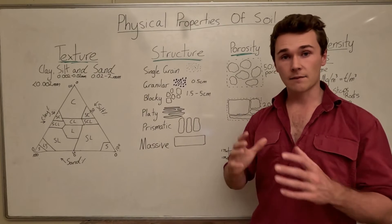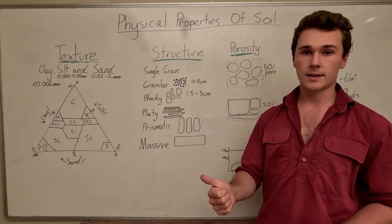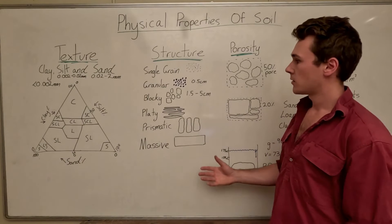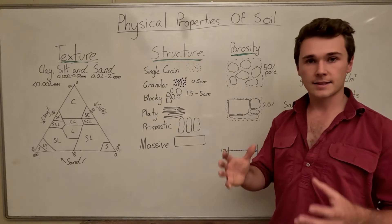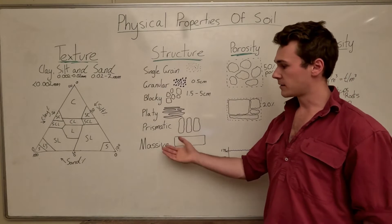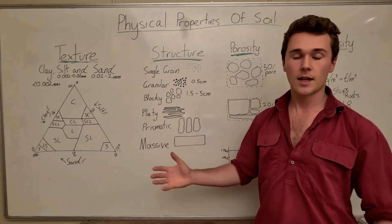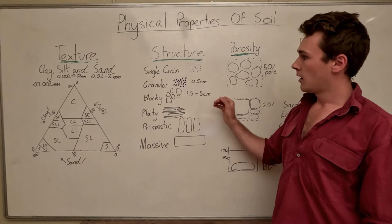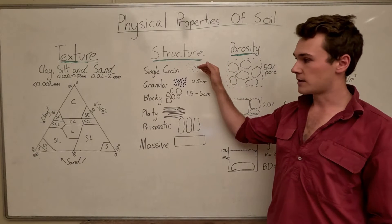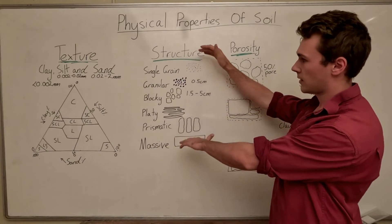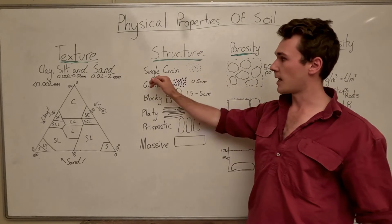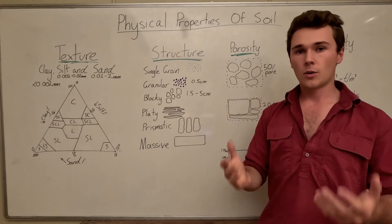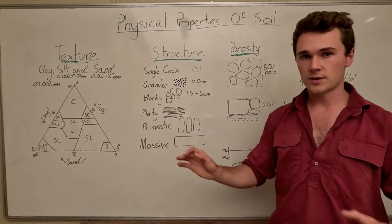All of these structures determine the amount of gas and water that flows into our soil, which is very important for plants, microbes, and roots. You want a nice amount of space in the soil. Massive, platy and prismatic soils prevent that and are signs of compaction, typical of clay soils. Single grain is typical of sandy soils — we don't want to be on either end. Sandy soils can have water flow straight through, washing everything out.